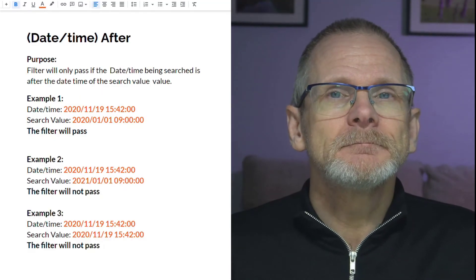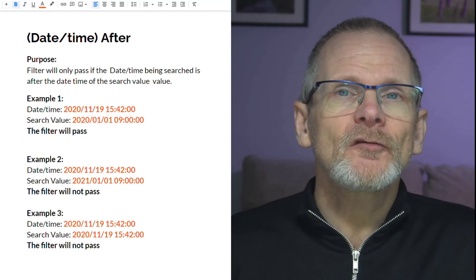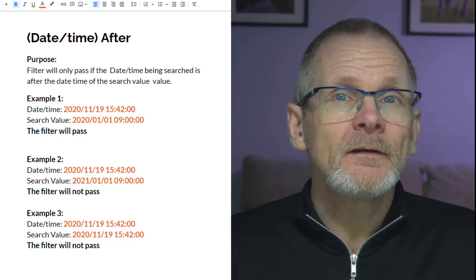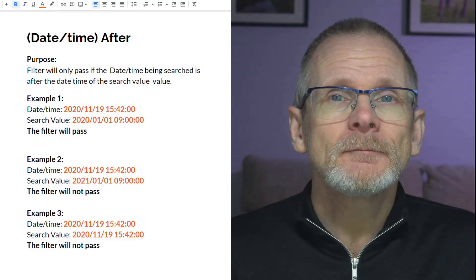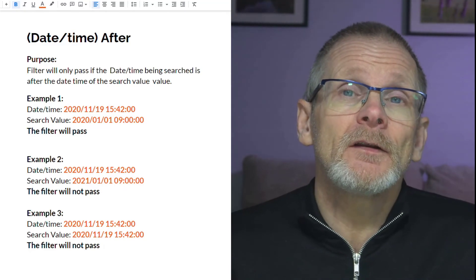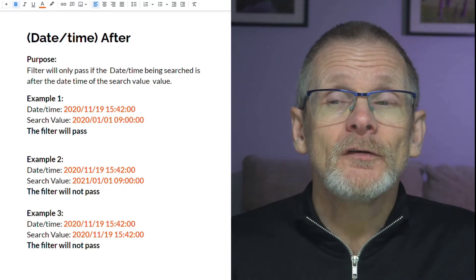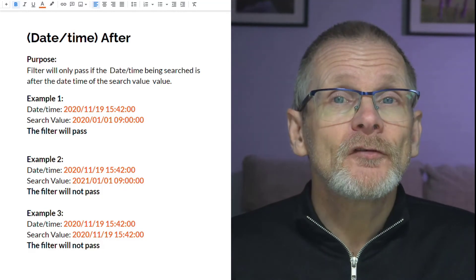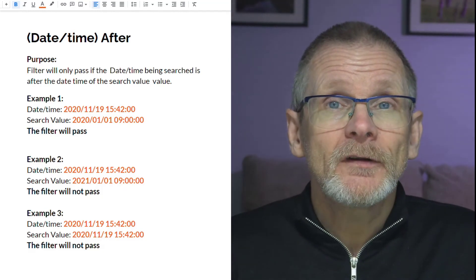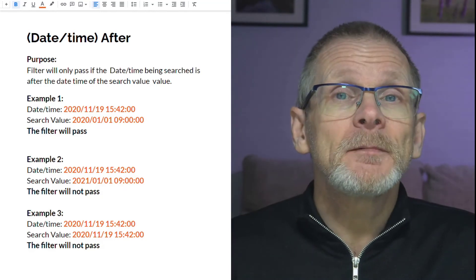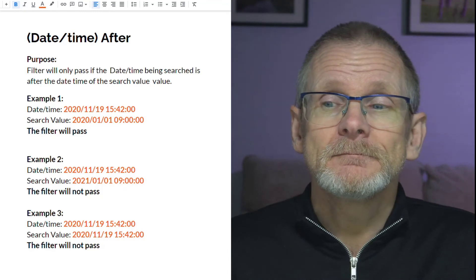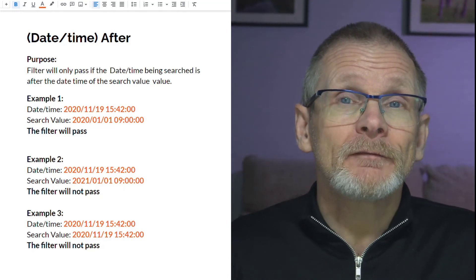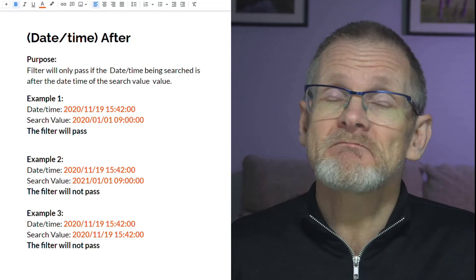'Date time after' — the Zap will only continue if the date and time being searched falls after the date and time in the search value. In example one, 19th November 2020 at 15:42 with a search value of 1st January 2020 at 9:00 — the Zap continues because our date is after the search value. In example two, using 1st January 2021 as the search value, the Zap would not continue. In example three, an exactly matching date and time also won't pass — it must be strictly after.